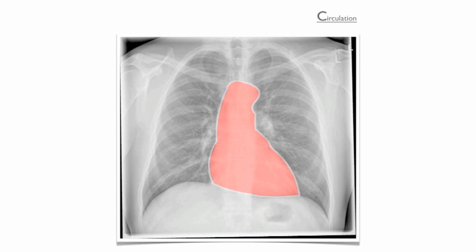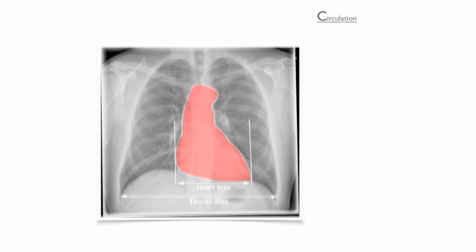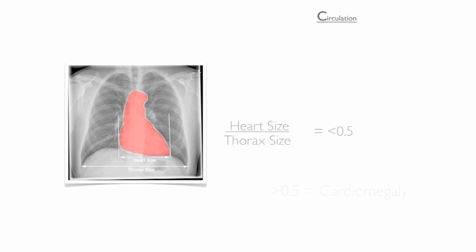After tracing the borders, the next step is to look at the heart size. Measure the heart and thorax at their widest points and divide one by the other. The result should be less than 0.5. If it is greater than 0.5, this suggests cardiomegaly. Note that heart size can only reliably be measured in a PA radiograph, as an AP radiograph commonly distorts the size of the heart.